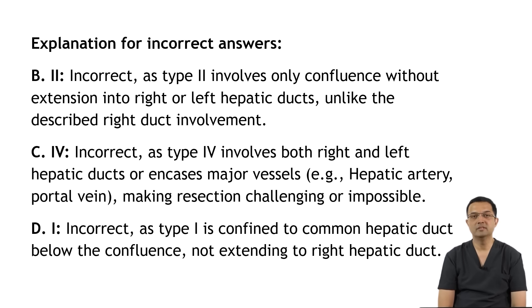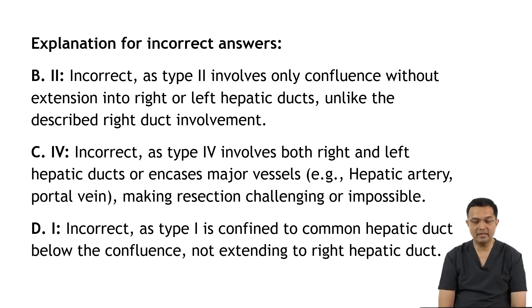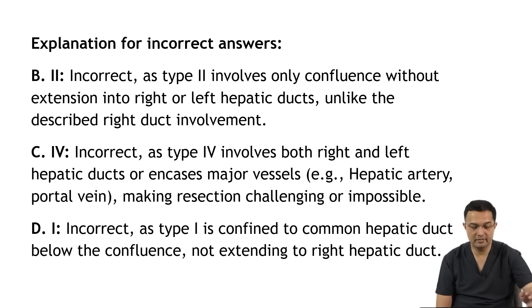Regarding the other options: type 2 is incorrect as it involves only the confluence without extension into the right or left hepatic duct. Type 4 is incorrect because it involves both right and left hepatic ducts. Type 1 is incorrect because the involvement is confined to the common hepatic duct below the confluence and does not extend into the hilum or into the left or right hepatic duct.